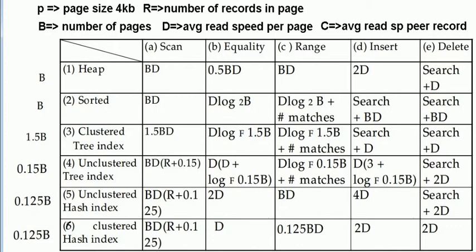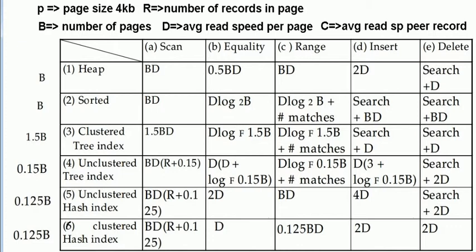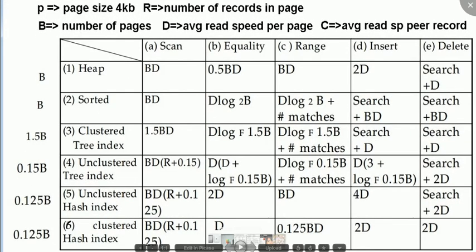The same applies for an unclustered tree and B+ tree. For the unclustered tree we have BD times R plus 0.15B. R is the number of records in each page, and we add this because with an unclustered index we don't have the cluster ordering. For the unclustered hash index we have a constant 0.125B, so we multiply BD times R plus 0.125B.